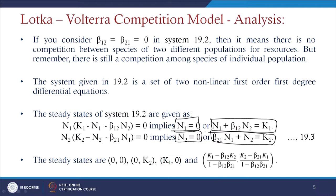The steady states are: (0, 0) when both n1 and n2 are zero; (K1, 0) when n1 = K1 and n2 = 0; (0, K2) when n2 = K2 and n1 = 0; and a fourth coexistence equilibrium at ((K1 − β12·K2)/(1 − β12·β21), (K2 − β21·K1)/(1 − β21·β12)), giving us four equilibrium points in total.